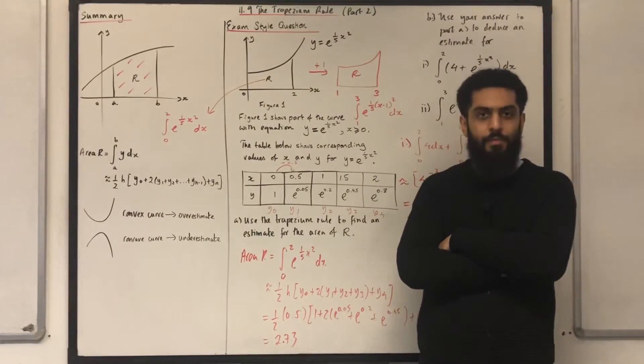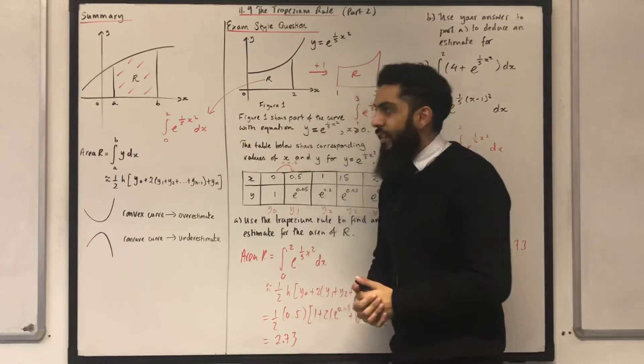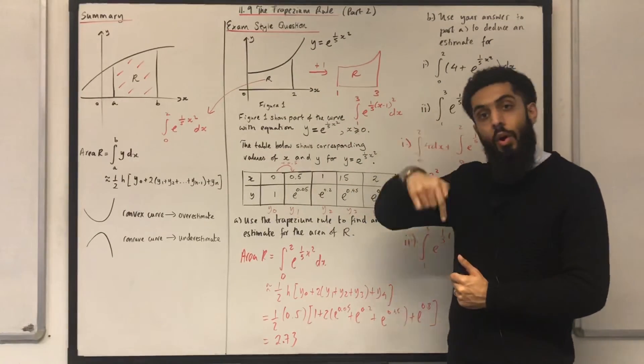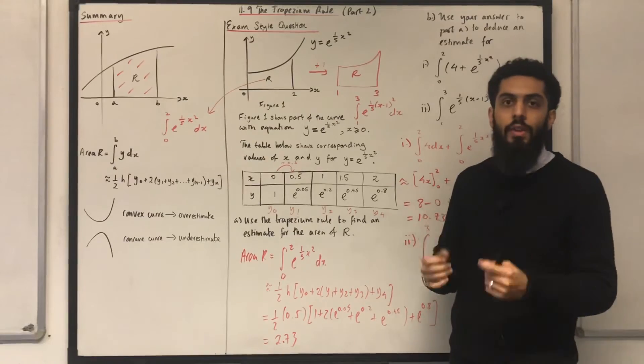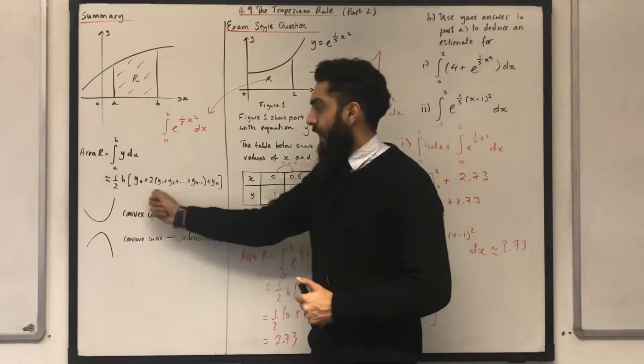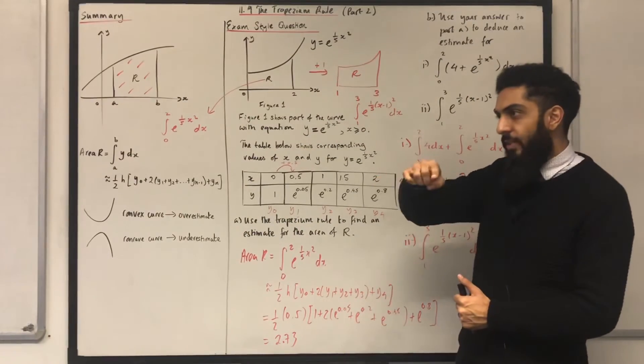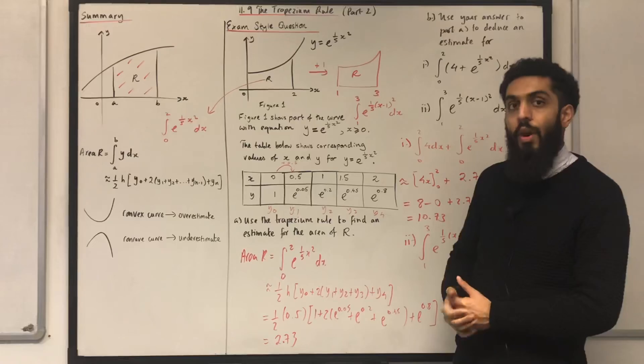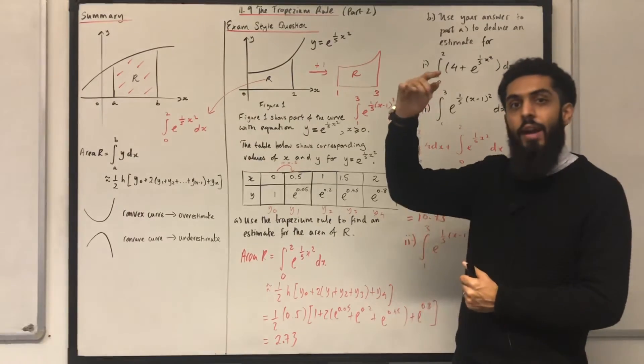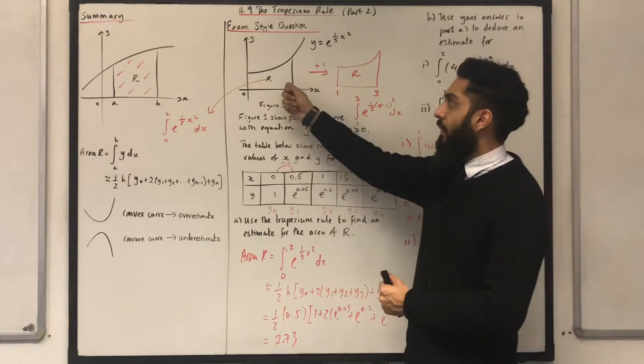Let's go back to part A. The area R is approximately 2.73. Is this area R an overestimate or an underestimate? How would you conclude? You just go back to your curve. This curve over here is a convex curve. For a convex curve, if we work out the area under the curve bounded by the x-axis using the trapezian rule, our area will be an overestimate. So, 2.73 is an overestimate for the area of R.